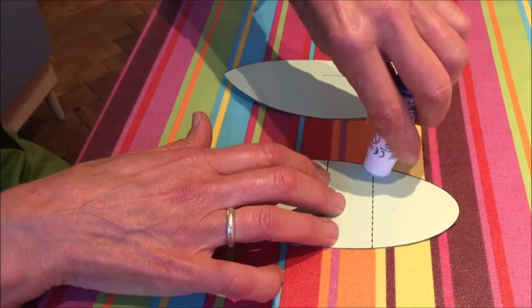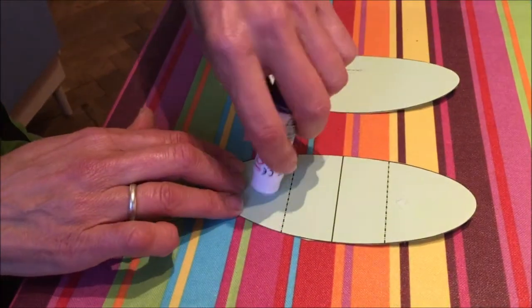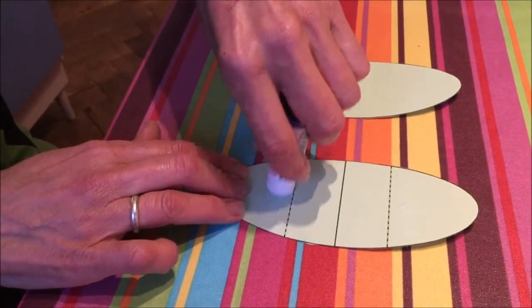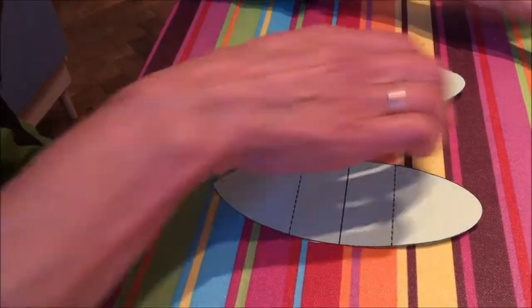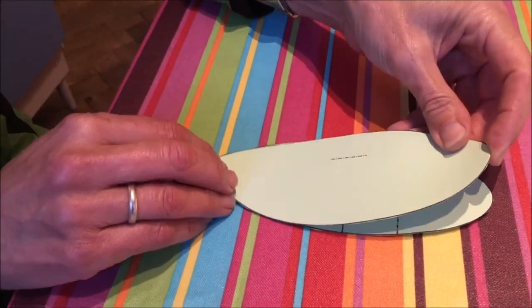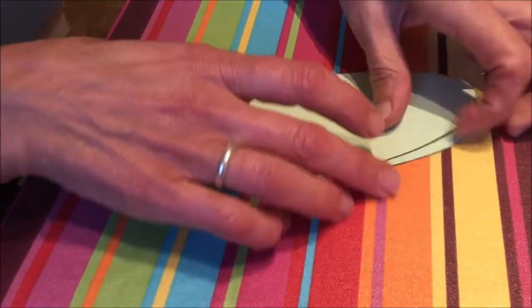We now stick the body of the bird together, and as you can see, use a glue stick and stick along the lines. Make sure you don't stick to the very end so you've got room to add the beak and the tail.